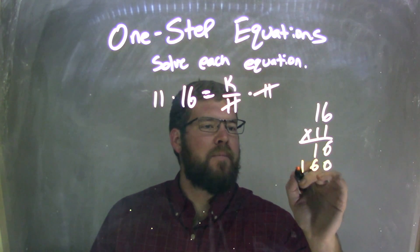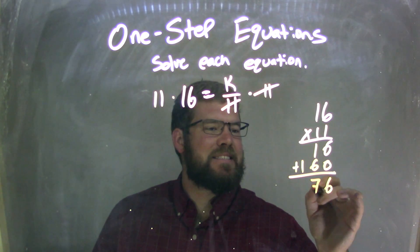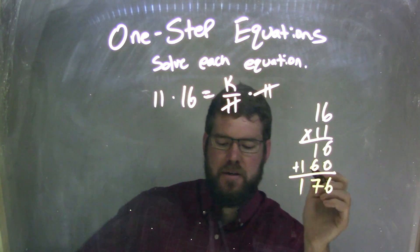And I have 1 times 6 is 6, 1 times 1 is 1. Let's add them together, 6 plus 0 is 6, 1 plus 6 is 7, and we have a 1 right here, all right, why this comes down.